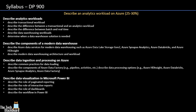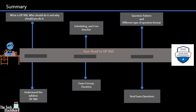This brings us to the end of the first episode of the DP900 series. To summarize: we looked at what is DP900, who should do it, and why. We then understood the syllabus for DP900, and I took you through the Microsoft Learn website to give you more insights about the course content. In the upcoming Episode 2, we will see how to schedule DP900, how to earn a free voucher, the exam format and duration, and the different question patterns and formats you can expect.